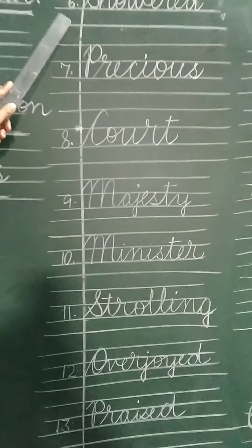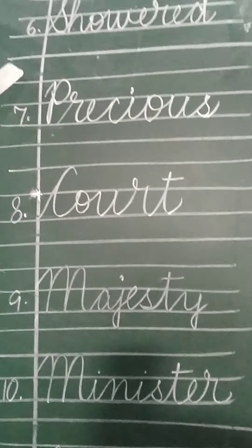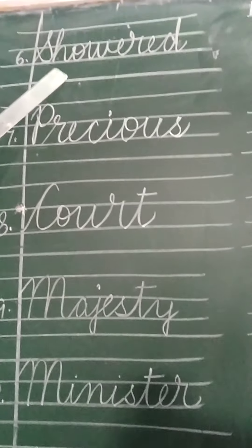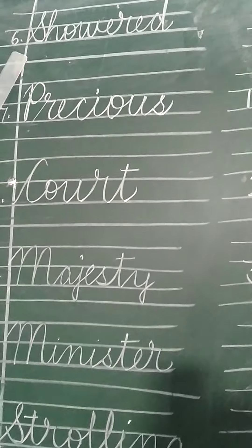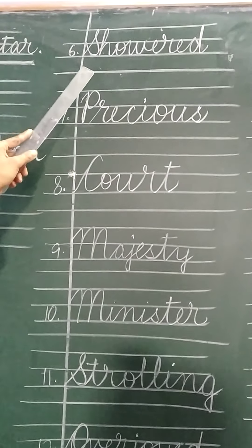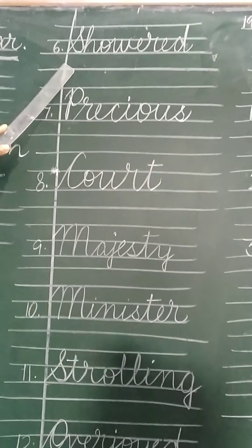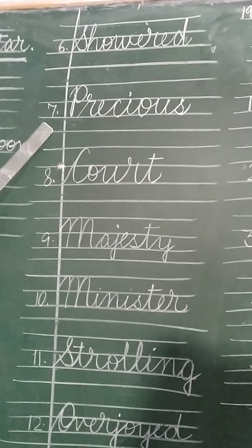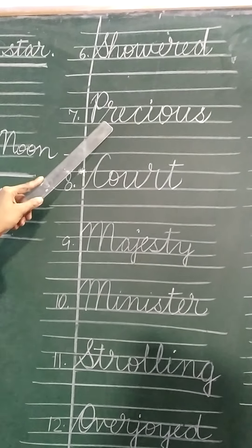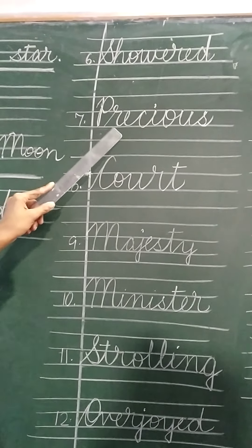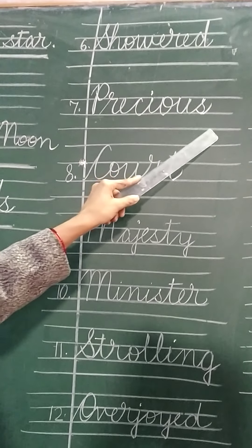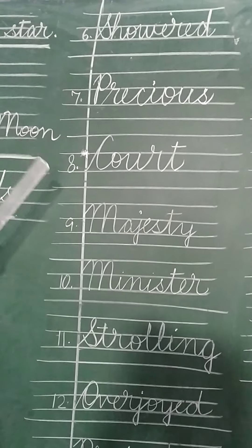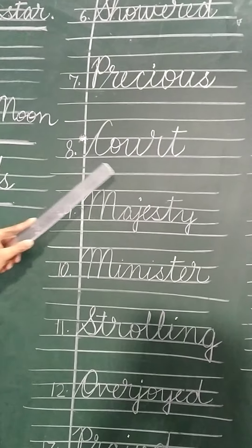The next word is shower. Shower means blessings — S-H-O-W-E-R-E-D, shower. Pay attention to this spelling. Number seven is precious, meaning costly — P-R-E-C-I-O-U-S, precious.